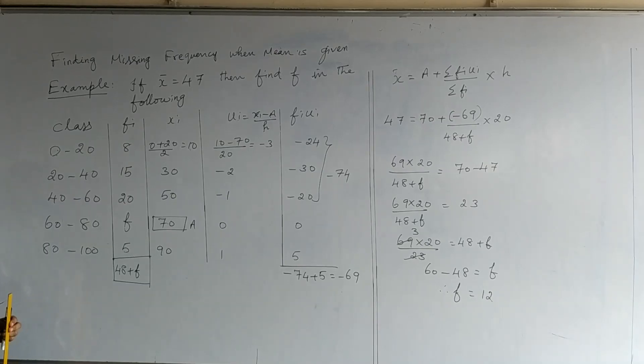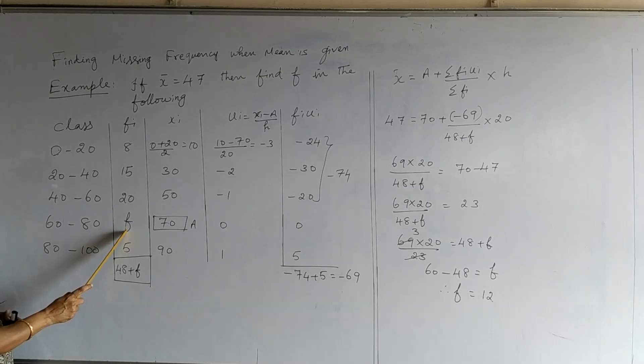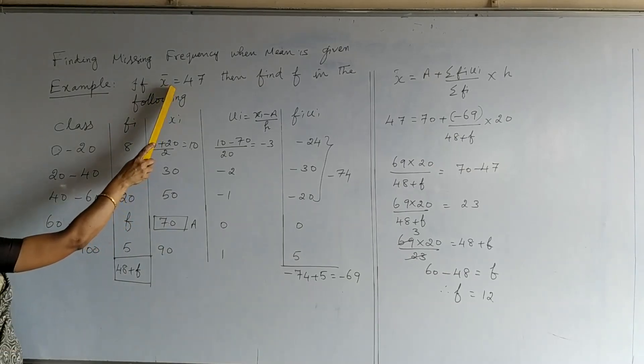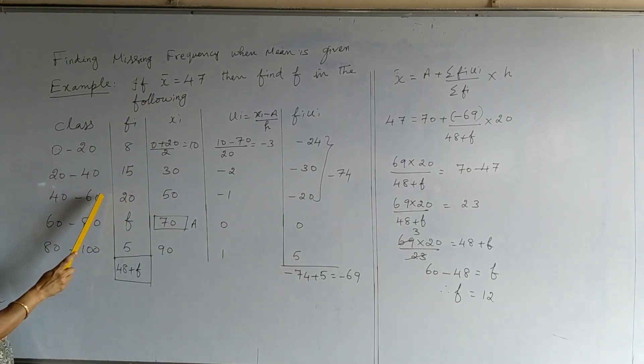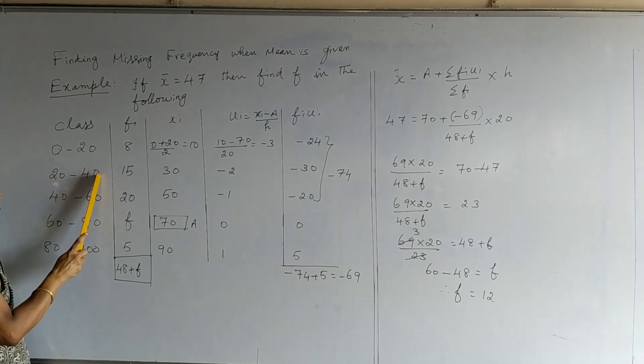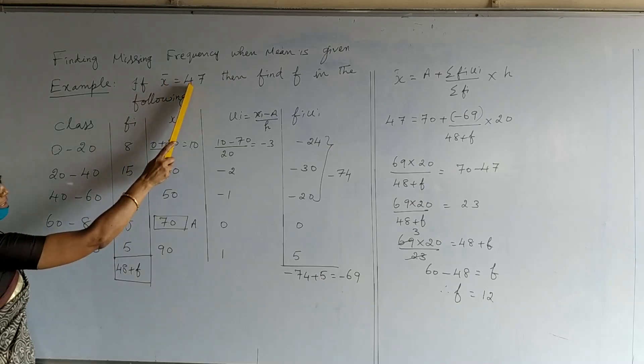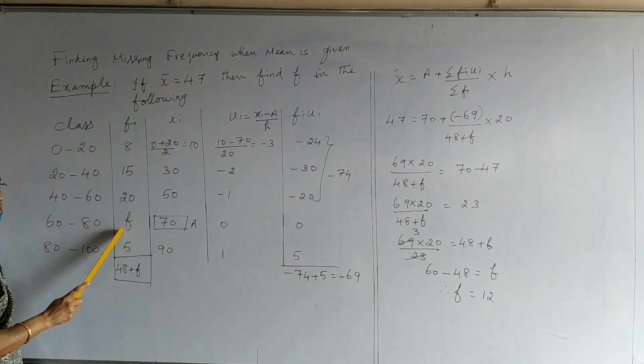Hello children, today we are going to see how to find out a frequency when mean is given. In the previous classes we studied how to calculate mean by direct method, assume between method and step deviation method when all the frequencies are equal. But here we can see one frequency is missing and mean is given. Using this we are going to calculate the value of f. You can see the classes are of equal length, hence we prefer step deviation method.